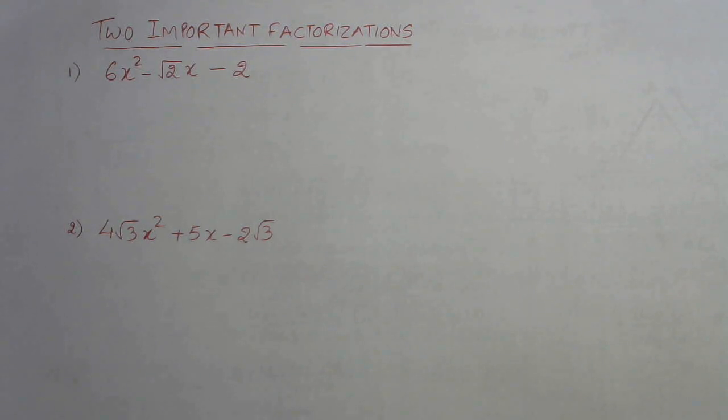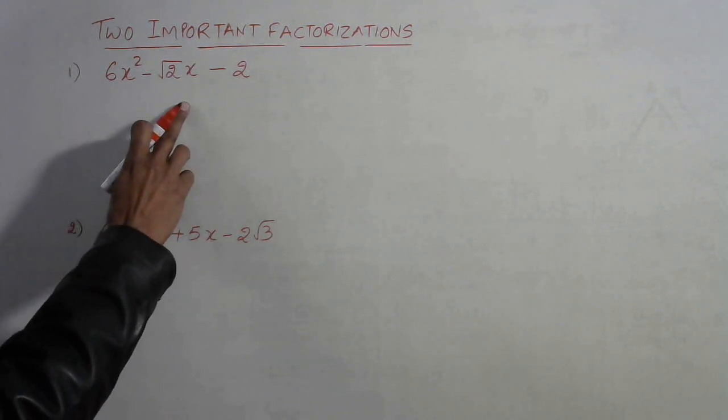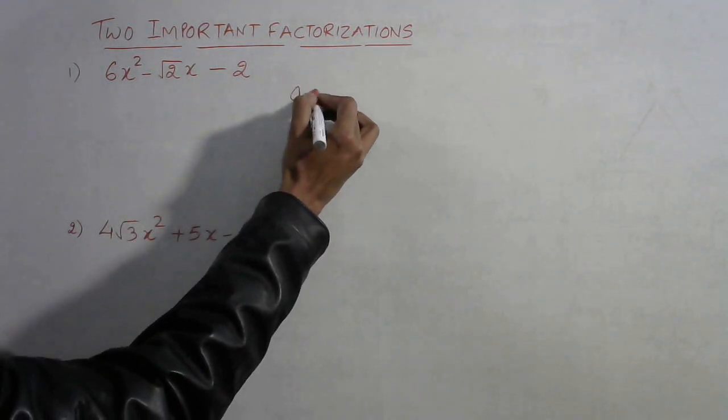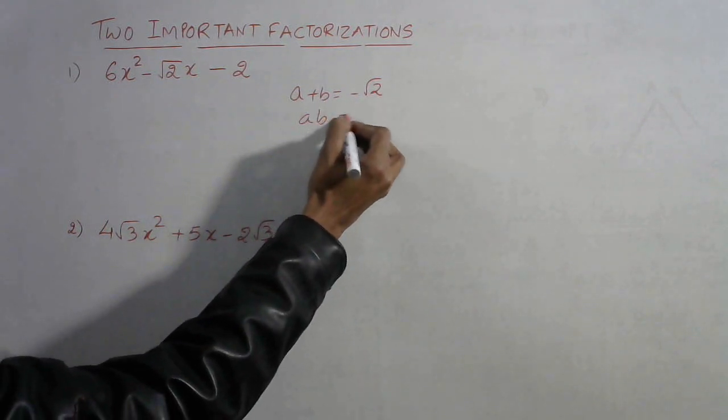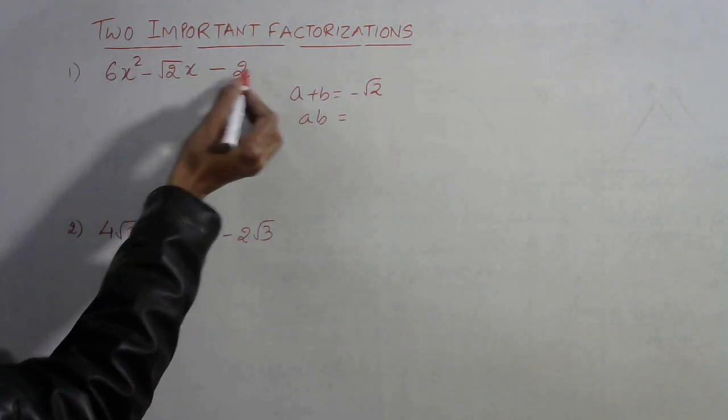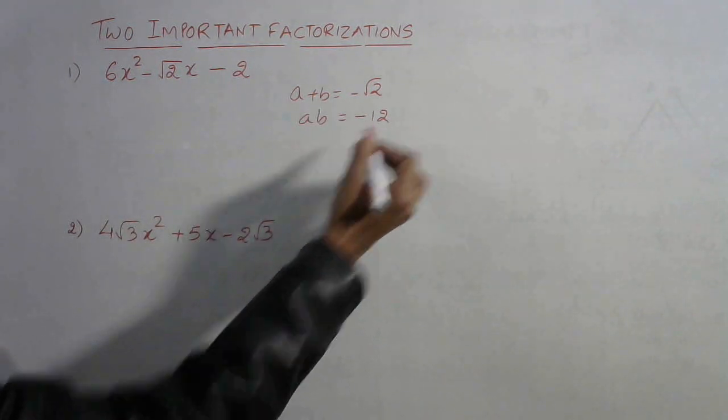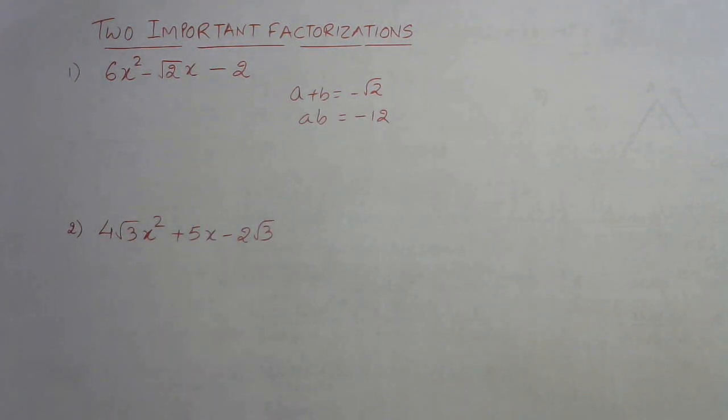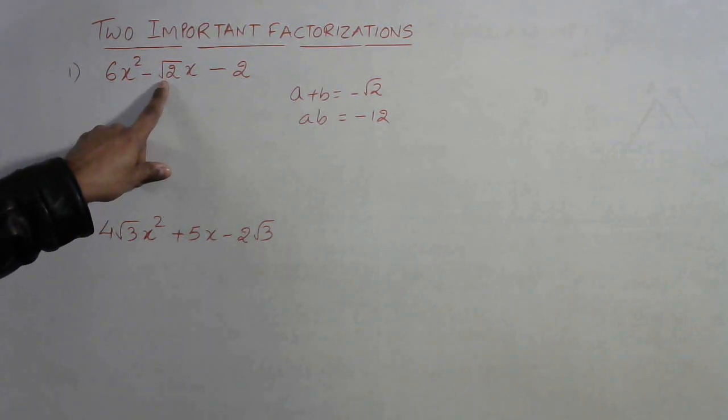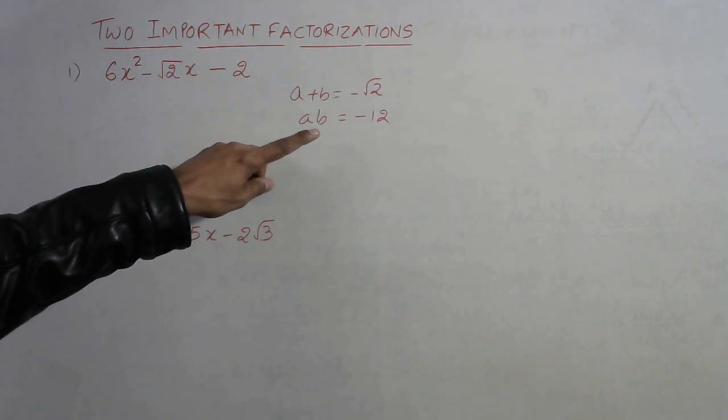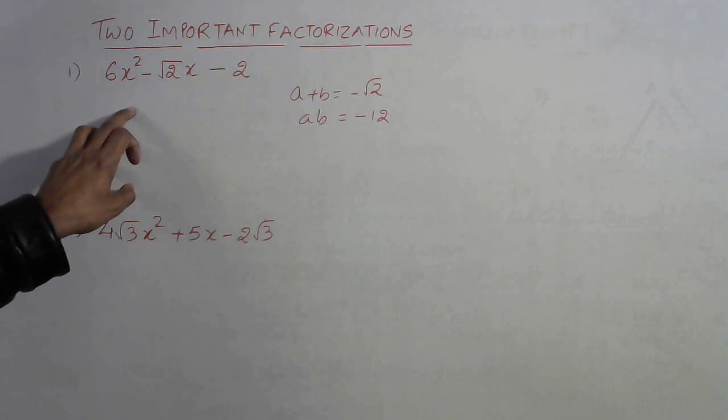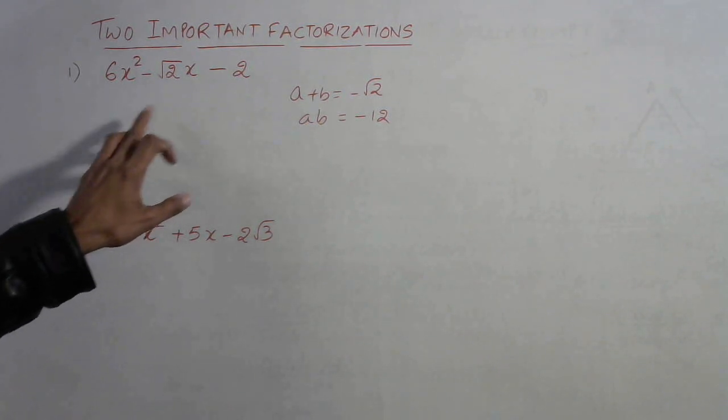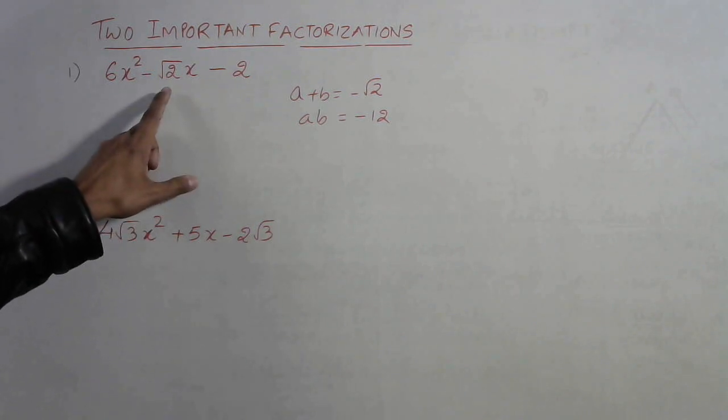Now see in the first question the middle term is minus root 2. So we need to have two numbers whose sum is minus root 2 and whose product is the product of the first and last, that is 6 and minus 2 which is minus 12. Now one thing to remember in such questions is that if the middle term contains a square root sign and the product does not contain a square root sign, like here, the middle term split of this number will contain square root 2 in both the factors in which the middle term will be split.